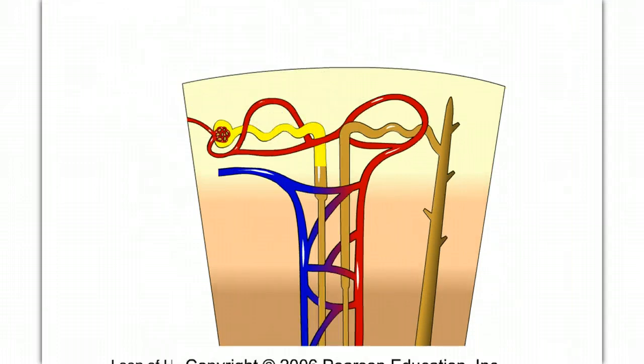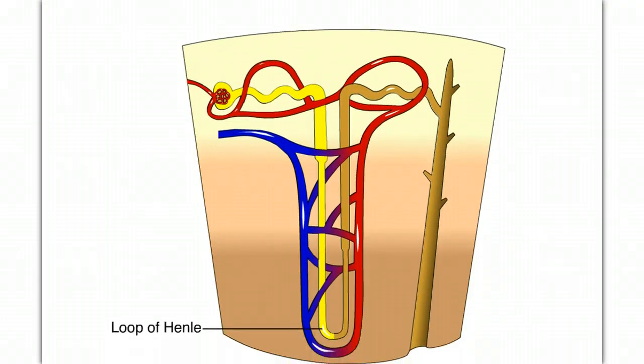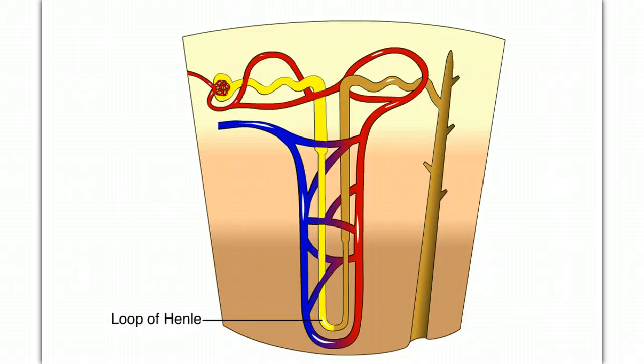As the filtrate moves down the loop of Henle, the concentration of solutes increases in the interstitial fluid surrounding the nephron tubule. Since this portion of the tubule is permeable to water, water leaves by osmosis and is reabsorbed into the blood. This concentrates the filtrate.